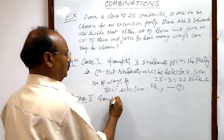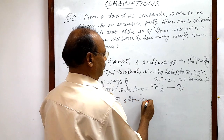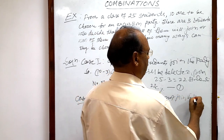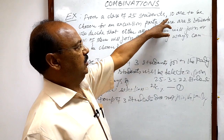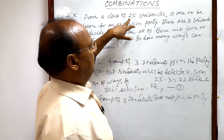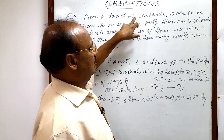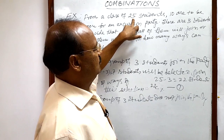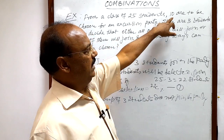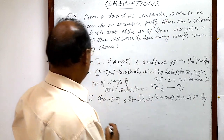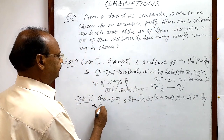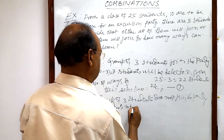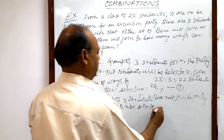Case two: when the group of three students do not join the party. Then we will select 10 students out of 22, because three students are not joining the party, so the total students available for selection will be 25 minus 3, that is 22, and we have to select 10 students.